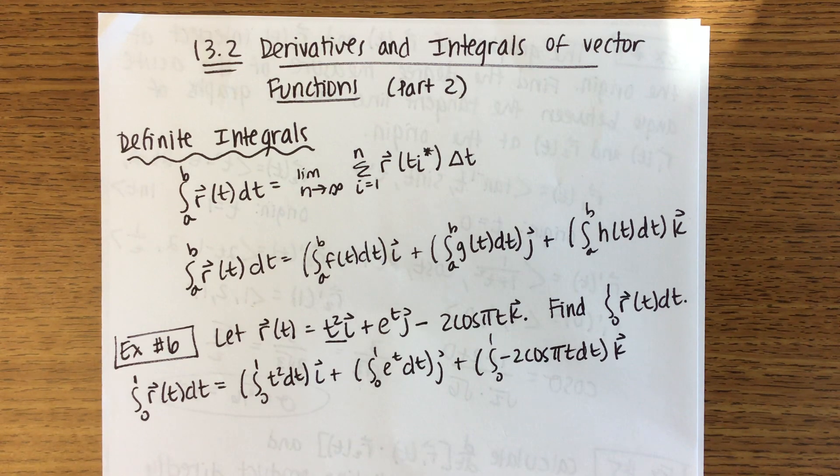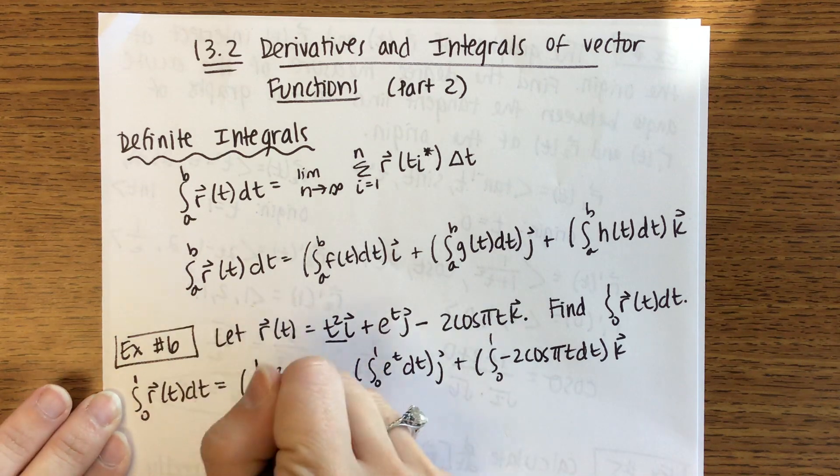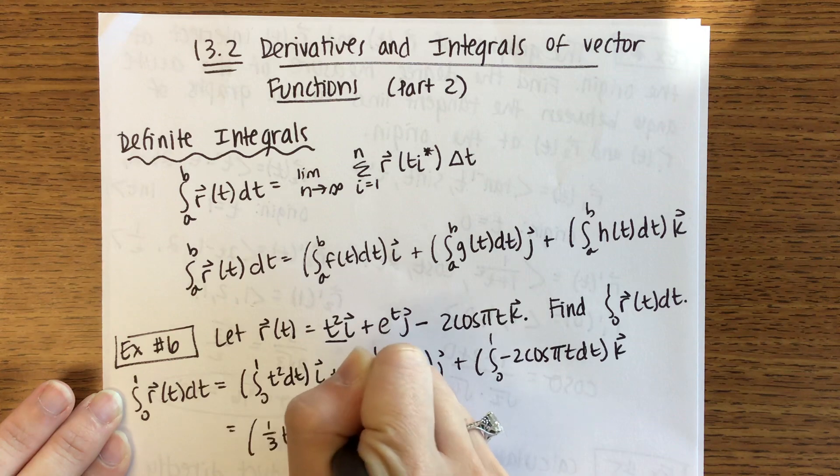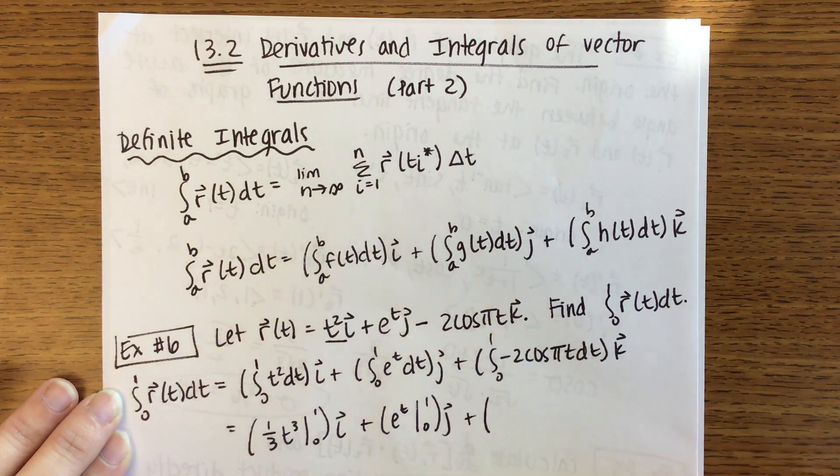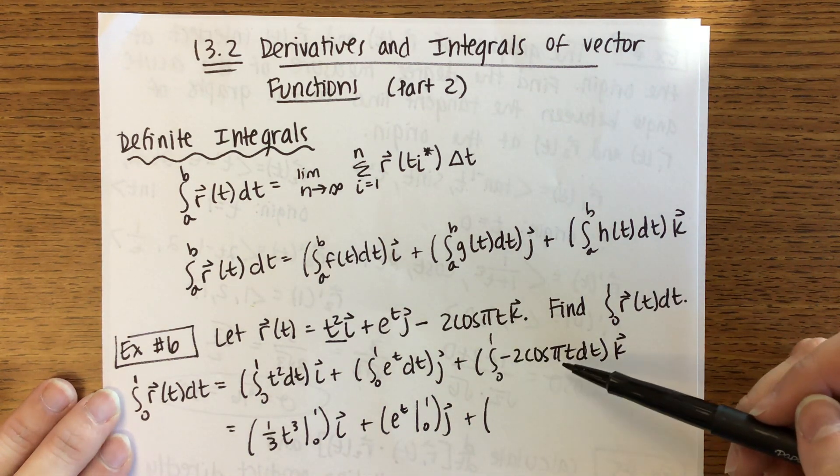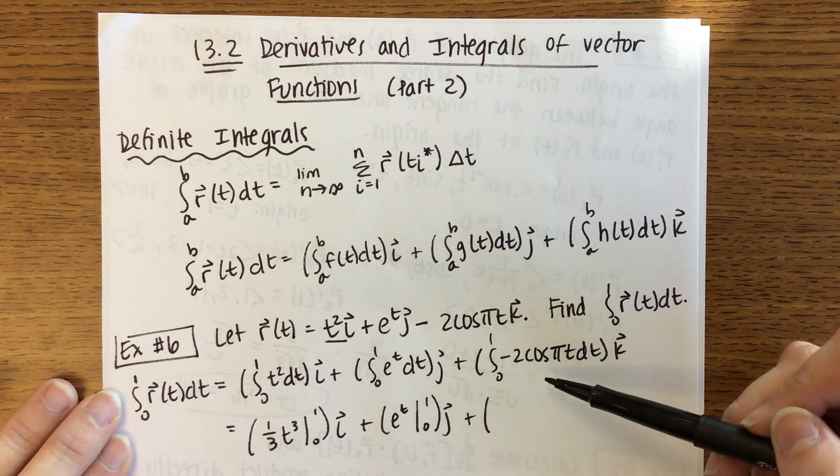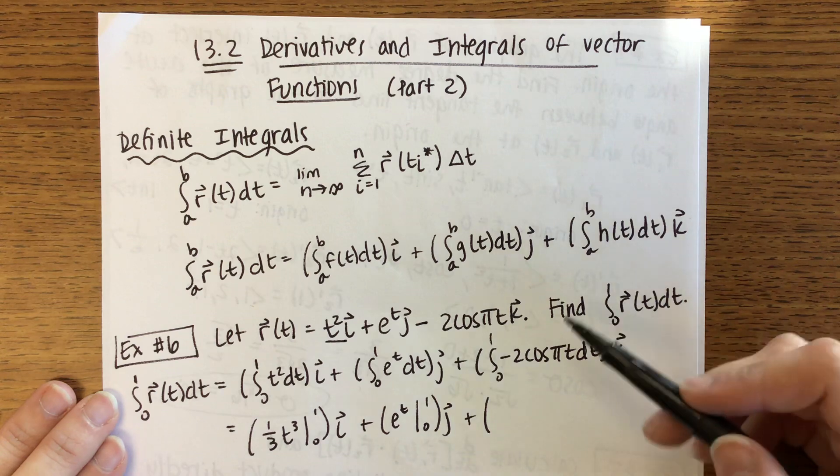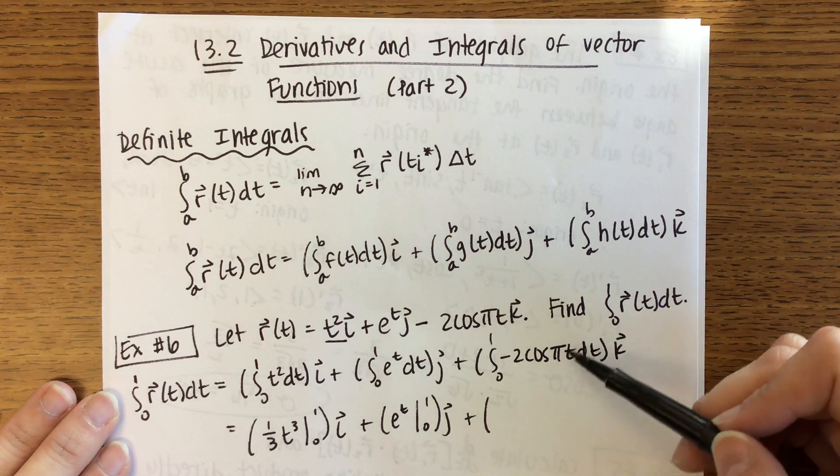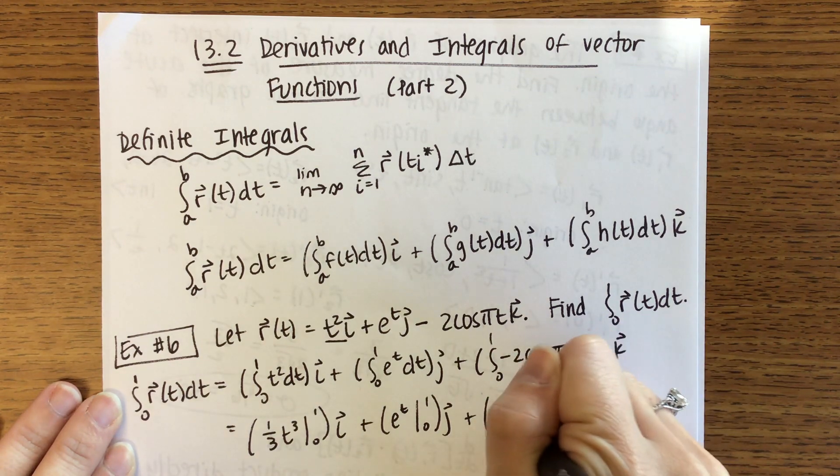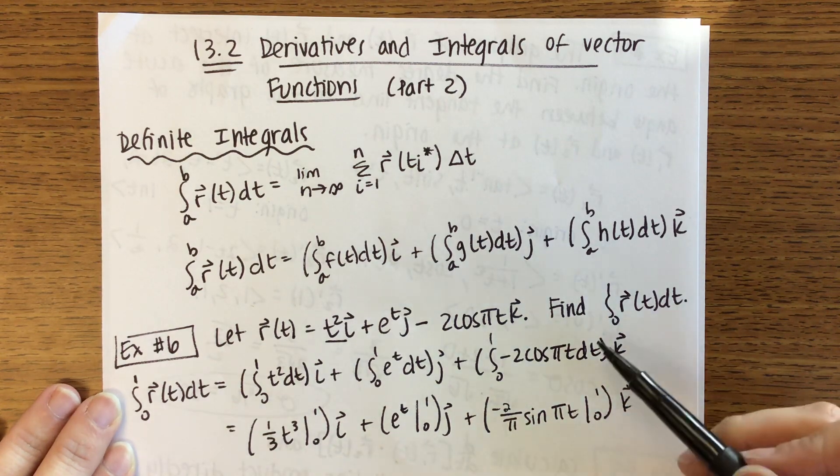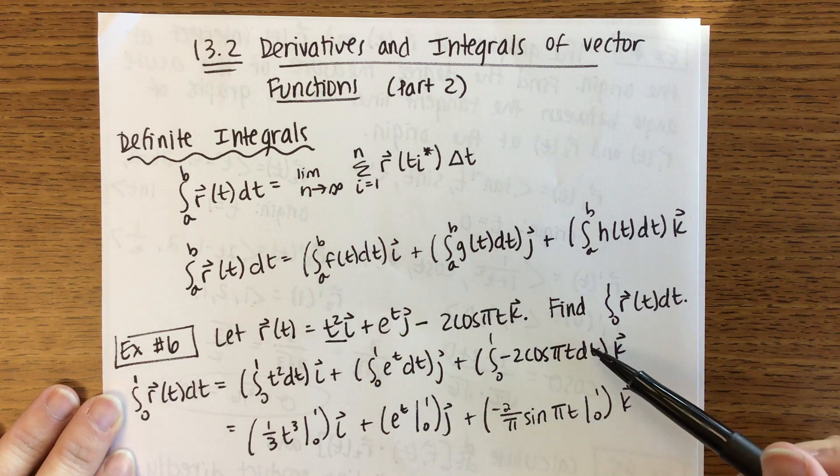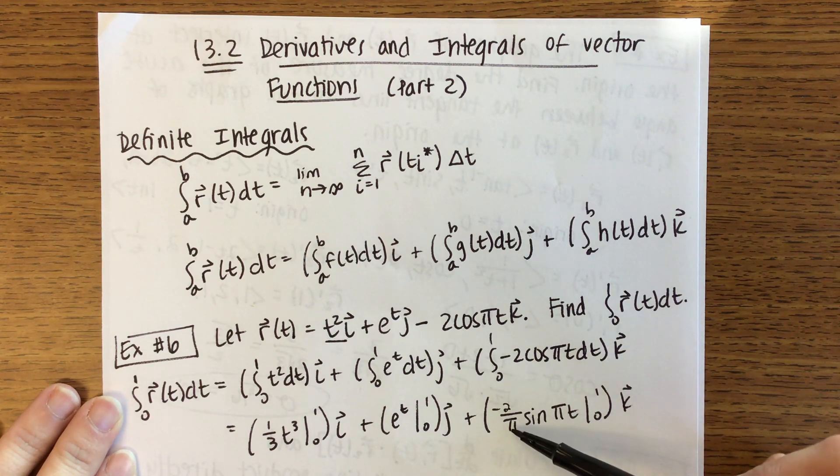This should be really similar to derivatives. Derivatives, you took the derivative of each component function; integral, you're taking the integral of each component function. So this first one is going to be 1/3 t³ from 0 to 1 times i, plus e^t from 0 to 1 times j. If I take the integral of cosine, I get sine. The integral of cosine will be sine. But then we have this chain rule to undo, so we'll get -2/π sin(πt) from 0 to 1 times k. Just do a double check in your head to make sure when I take the derivative of this, I get this, and I do. I would multiply by π, so the π's will cancel. Derivative of sine is cosine.